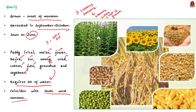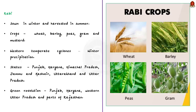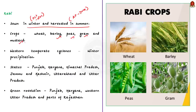Coming to the second season, which is the Rabi season. Rabi crops are sown in winter from October to December and harvested in summer from April to June. Important Rabi crops are wheat, barley, peas, gram and mustard. In general, Rabi crops require less water, and the availability of precipitation during winter months due to western temperate cyclones helps in the success of these crops. States from the north and northwestern parts of India such as Punjab, Haryana, Himachal Pradesh, Jammu and Kashmir, Uttarakhand and Uttar Pradesh are important for Rabi crops.